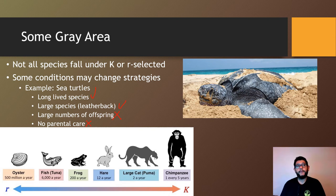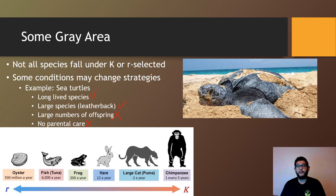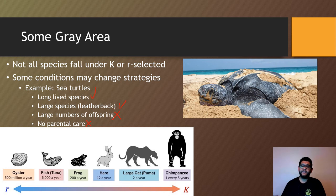Sea turtles have very limited numbers that survive to adulthood. Before humans, it was one in a hundred eggs that would make it to adulthood. With human involvement — things we do to beaches, poaching, and similar impacts — it's now one in a thousand. So they have very few successes, but they lay a lot of eggs to try to maximize their success.